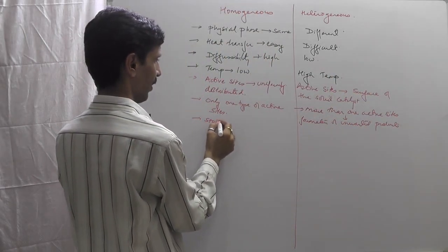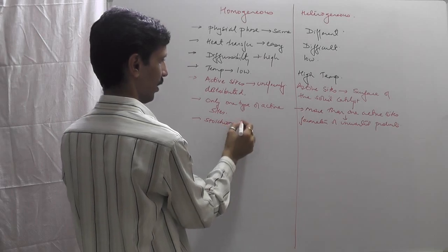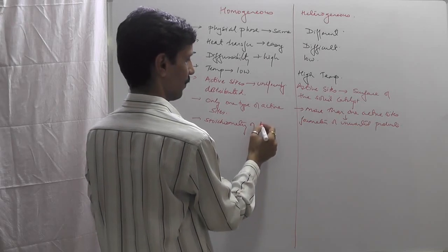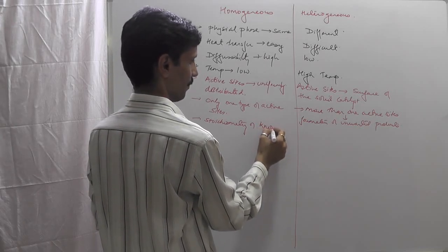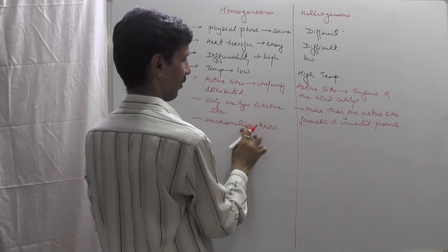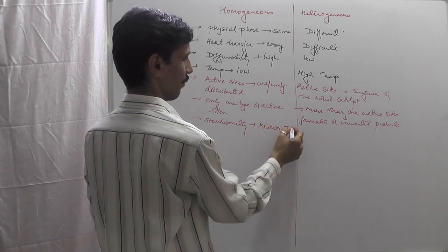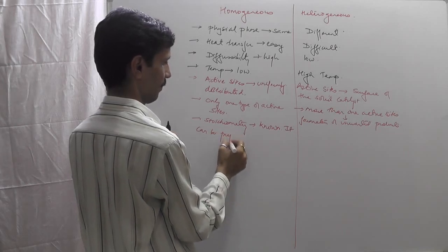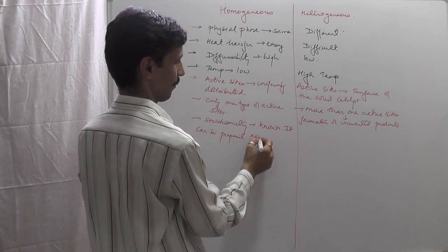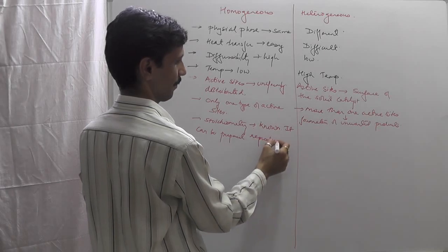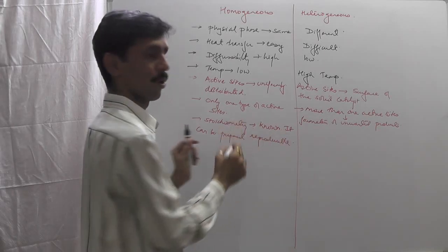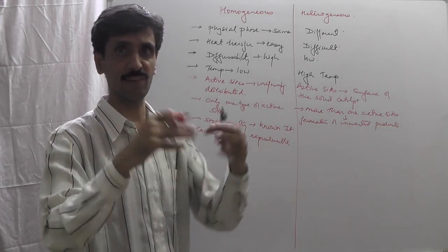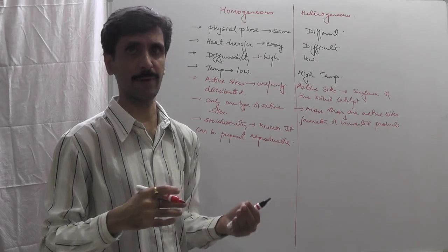The seventh point is about stoichiometry. In homogeneous catalysis, the stoichiometry is known — we know the composition of the catalyst and in what proportion it is made. As a result, it can be prepared under reproducible conditions and its preparation is very easy.